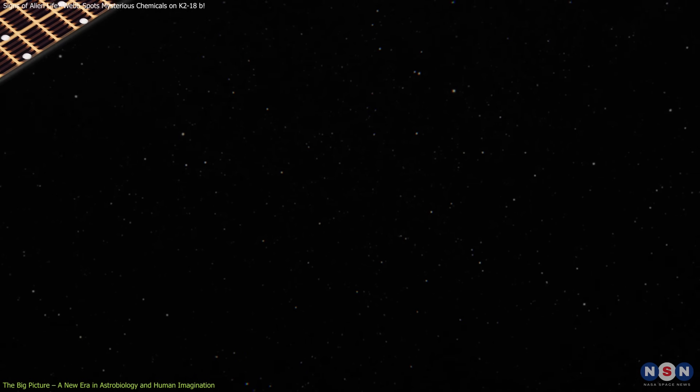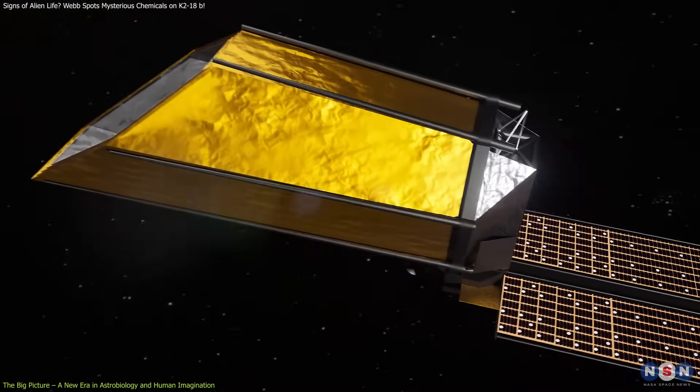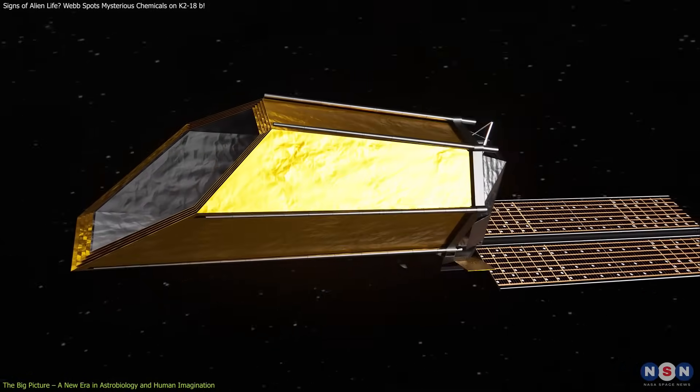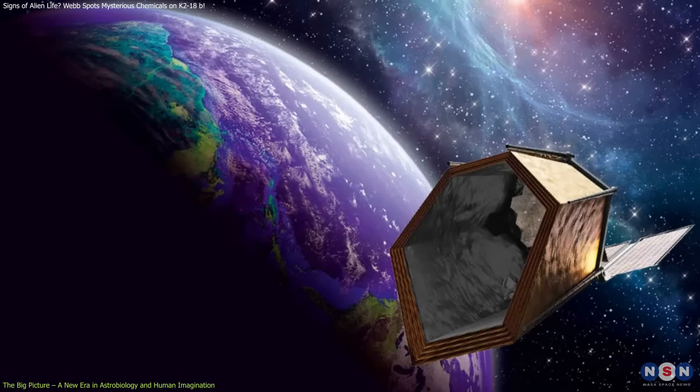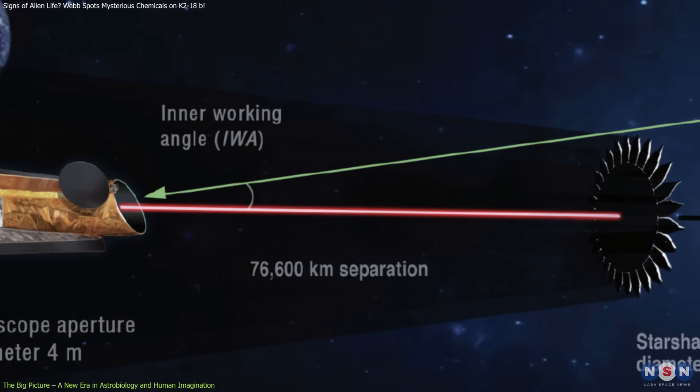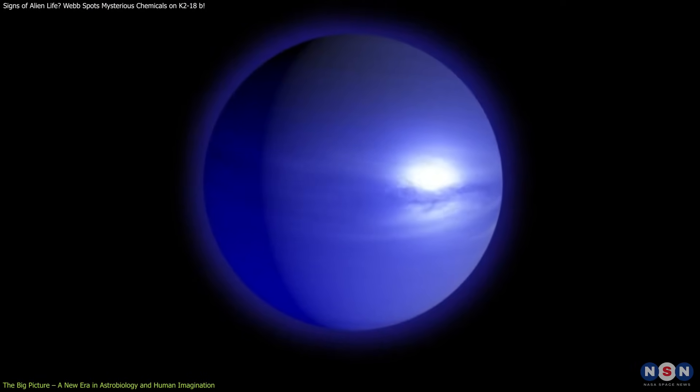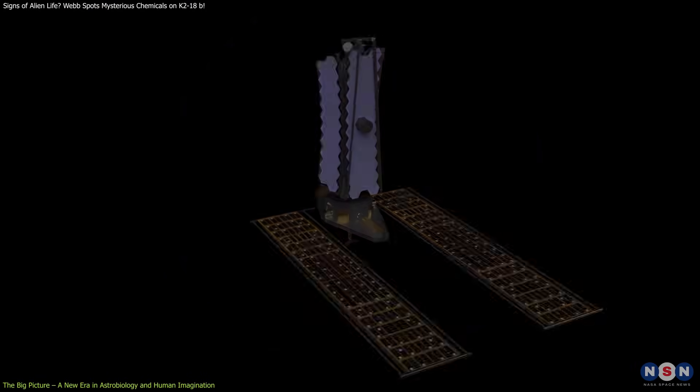NASA is also developing the Habitable Worlds Observatory, a next-generation space telescope expected in the late 2030s. It will be capable of directly imaging Earth-like planets and identifying signs of life through reflected light, weather systems, and possibly even seasonal changes.